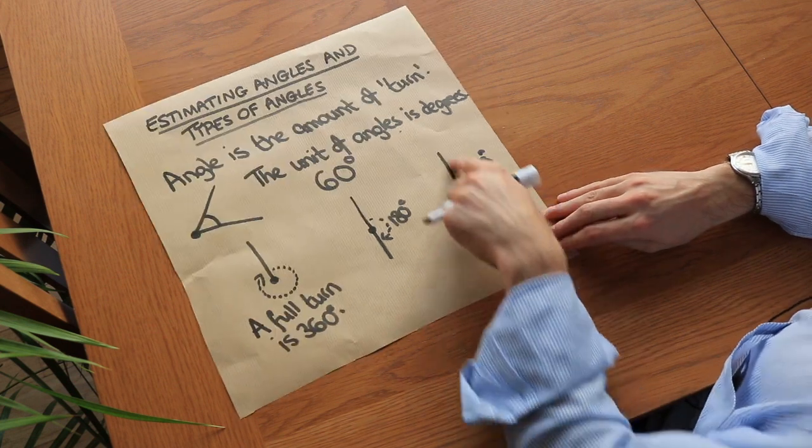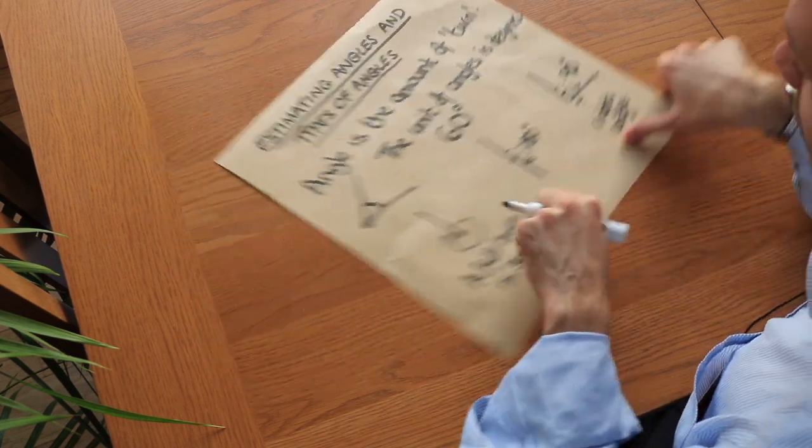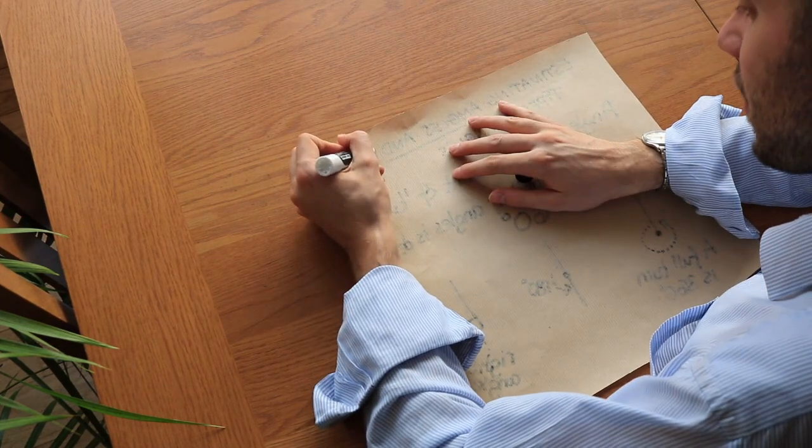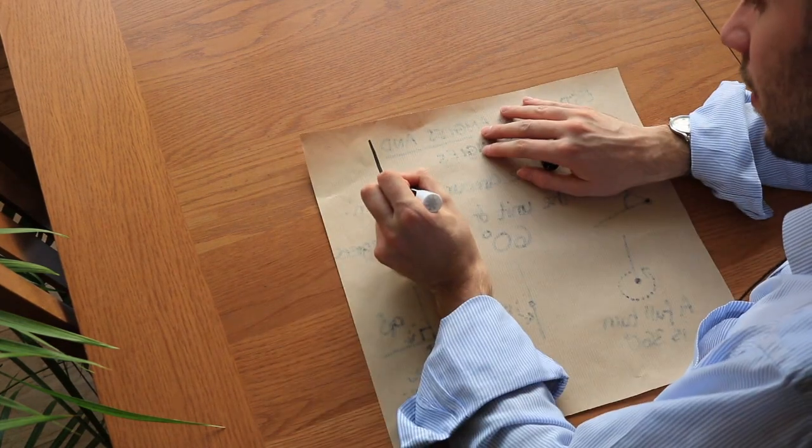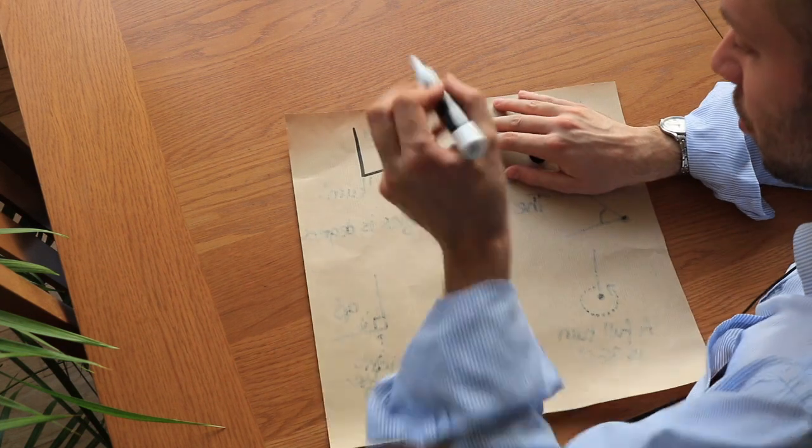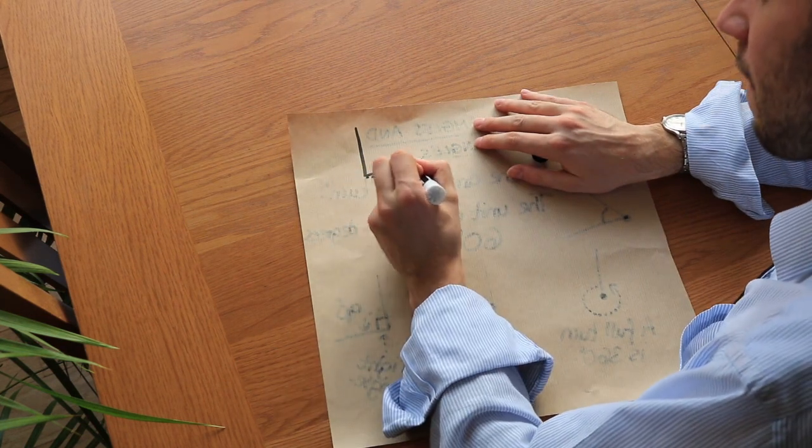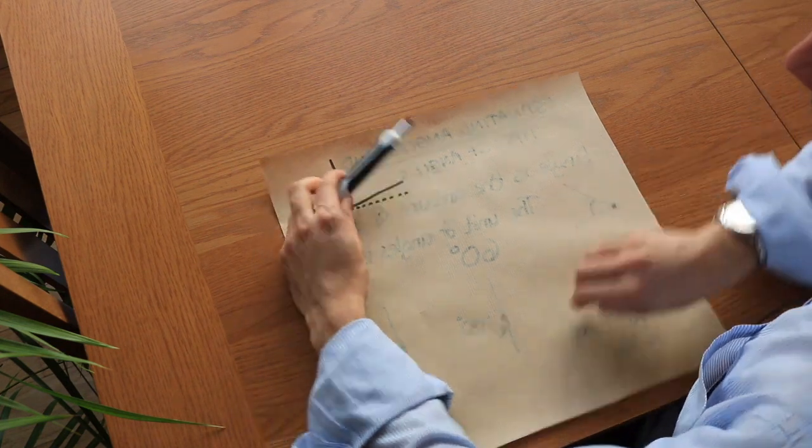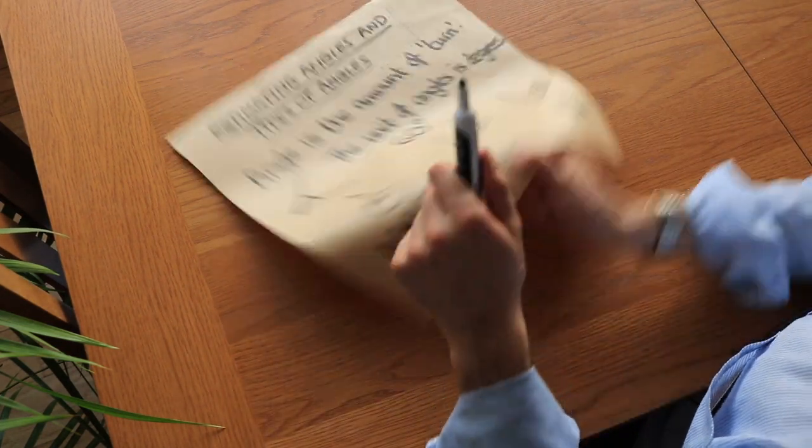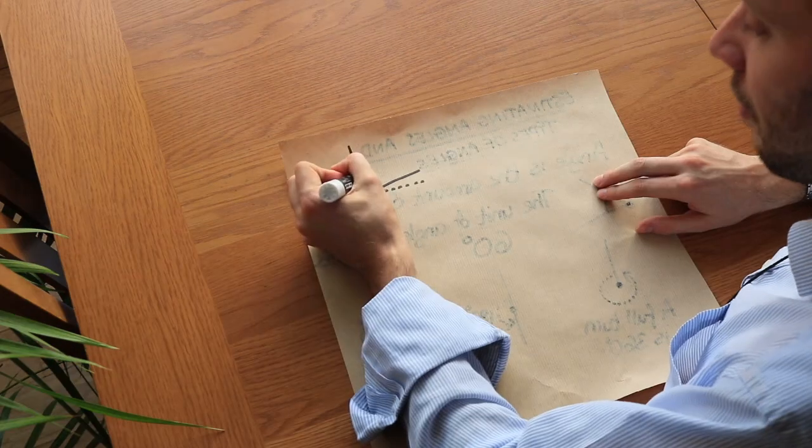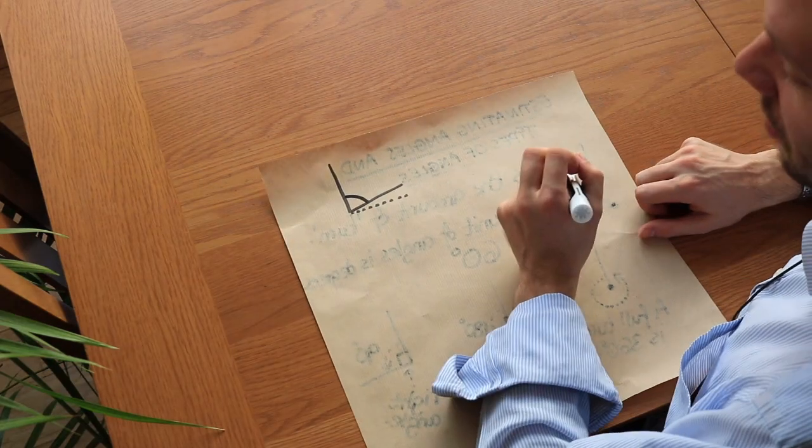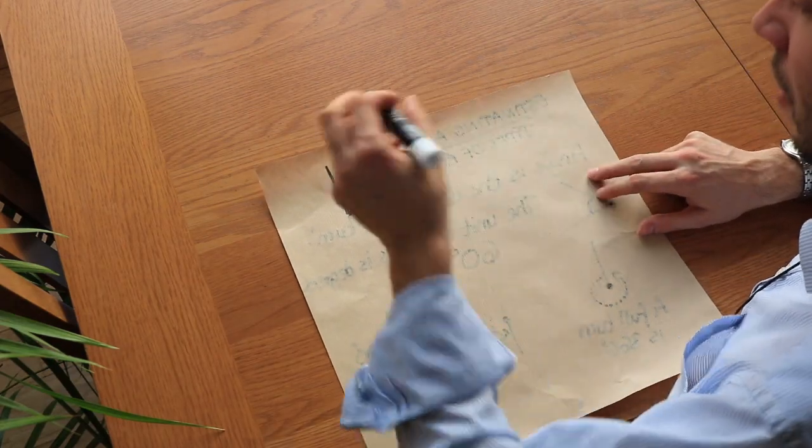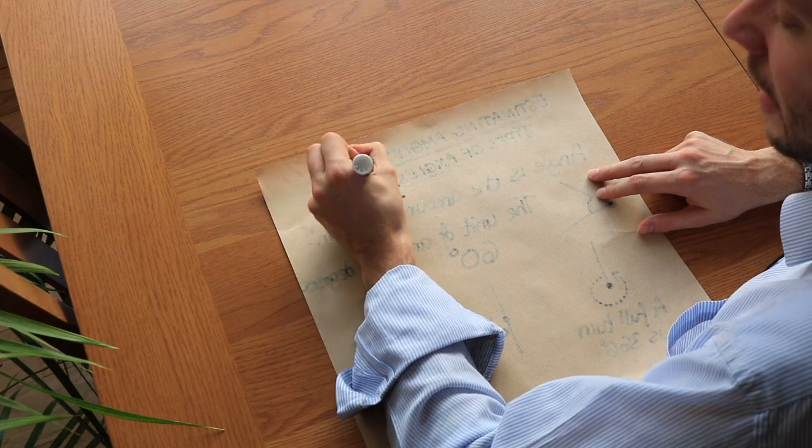Now how can we use this to estimate some angles? Let's say I had an angle like this. If I drew a dotted line here, can you see that the turn from here to here would be 90 degrees? It's a quarter of a spin. Therefore, this angle here is going to be a bit less than 90 degrees, so we might estimate that this is, say, 80 degrees.